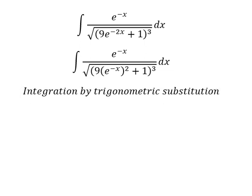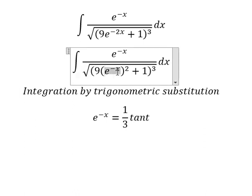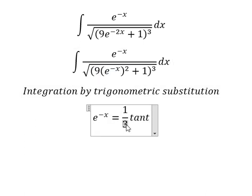I will set e to the power of negative x equals 1 over 3 times tan(t). If we put this in, we have 1 over 9 times t squared. The 9 and 9 will cancel, giving us t squared plus 1, which we change to sec squared of t.